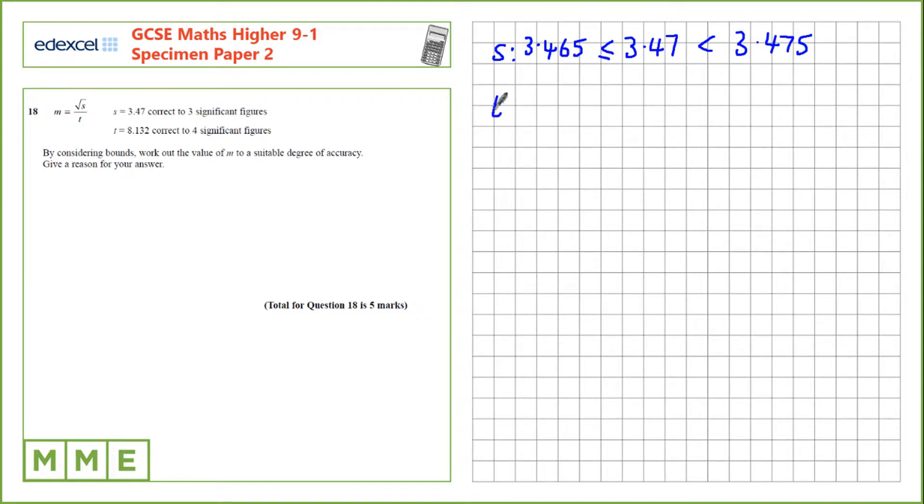Similarly, for t, we've got the value of t, which is 8.132. The upper bound is 8.1325. And we have the lower bound, 8.1315.